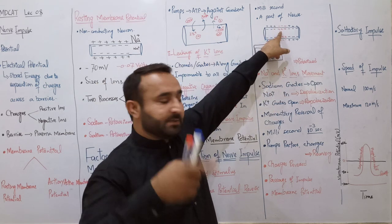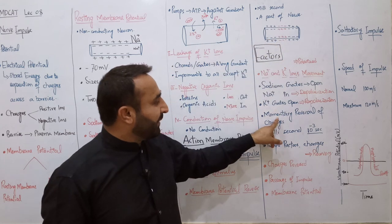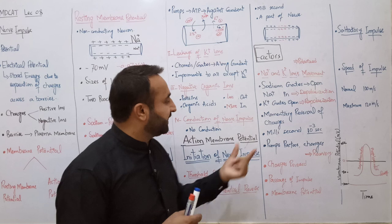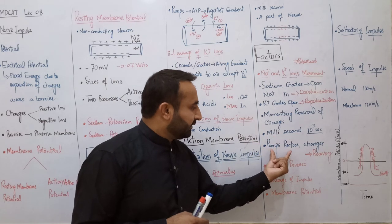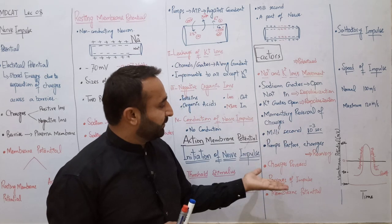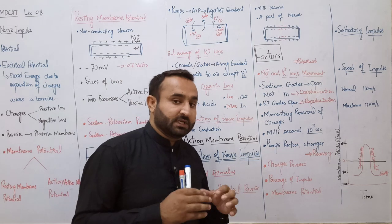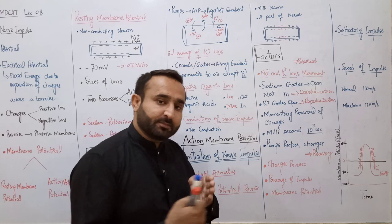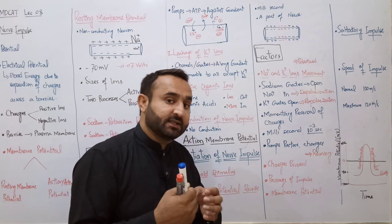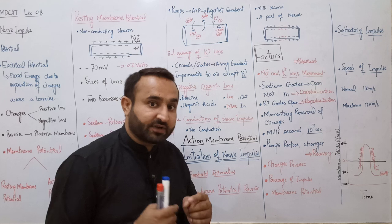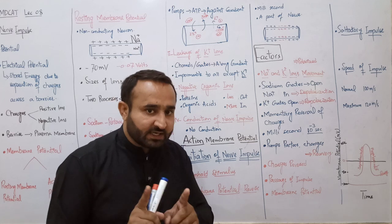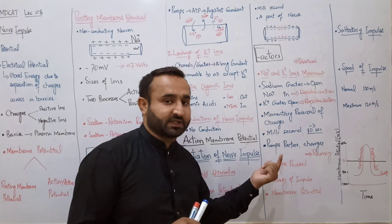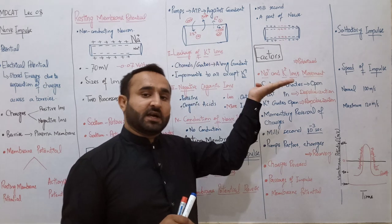Potassium gates open ہونے سے repolarization ہوگی - باہر negative اور اندر positive۔ یہ momentary reversal of charges ہے - milliseconds کے لیے ہے۔ پھر recovery ہے - دوبارہ سے resting membrane potential recover کر لیا جاتا ہے۔ اس دوران pumps کام کرتے ہیں - ATP use کرتے ہیں اور sodium کو باہر against concentration gradient اور potassium کو in against concentration gradient pump کرتے ہیں۔